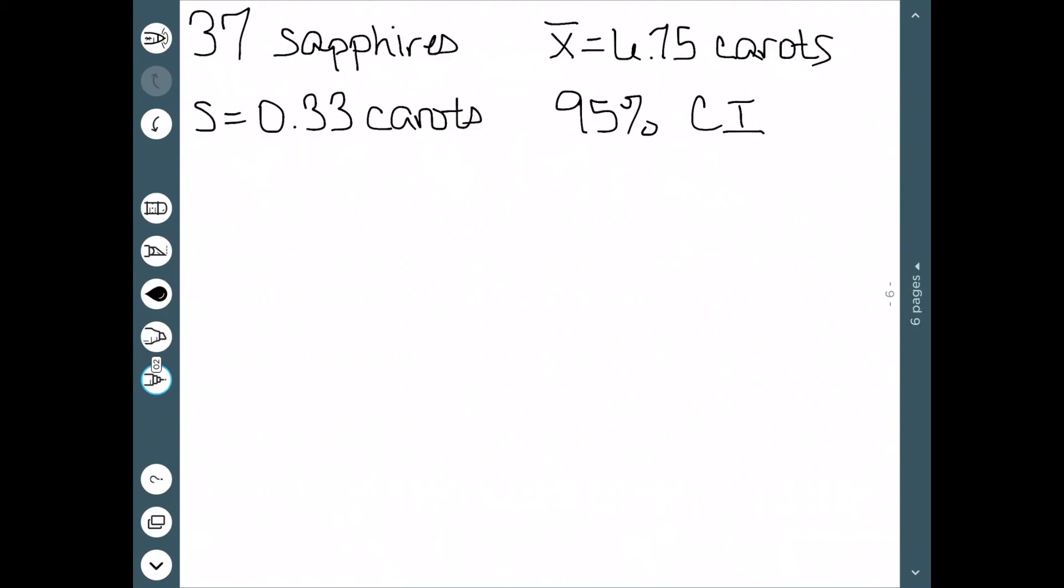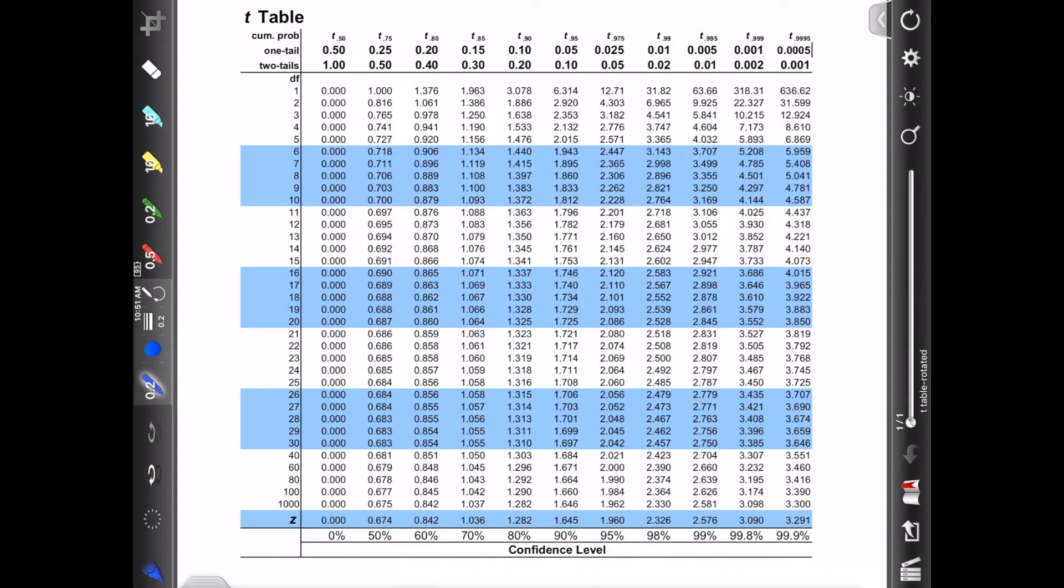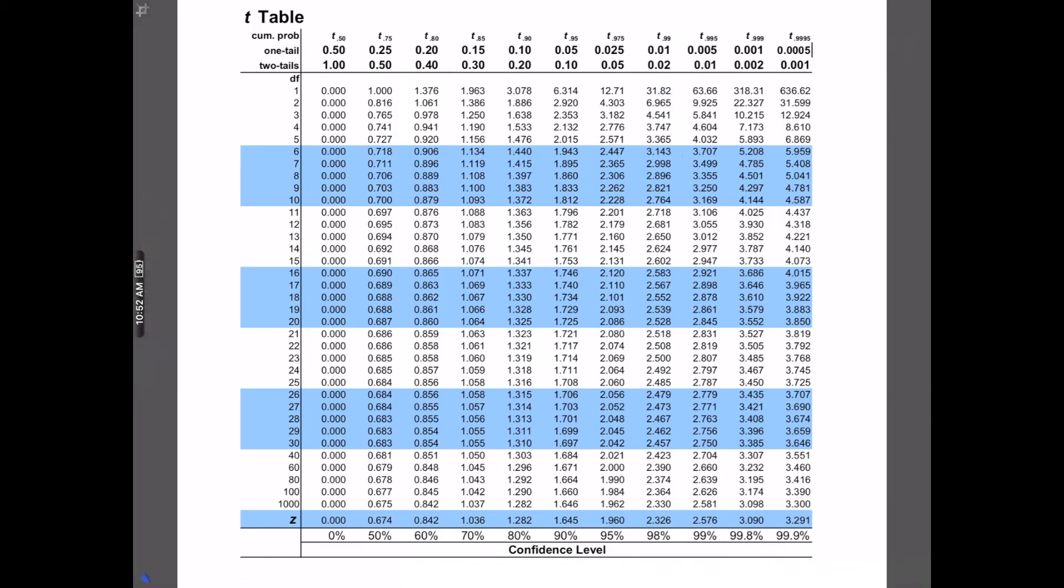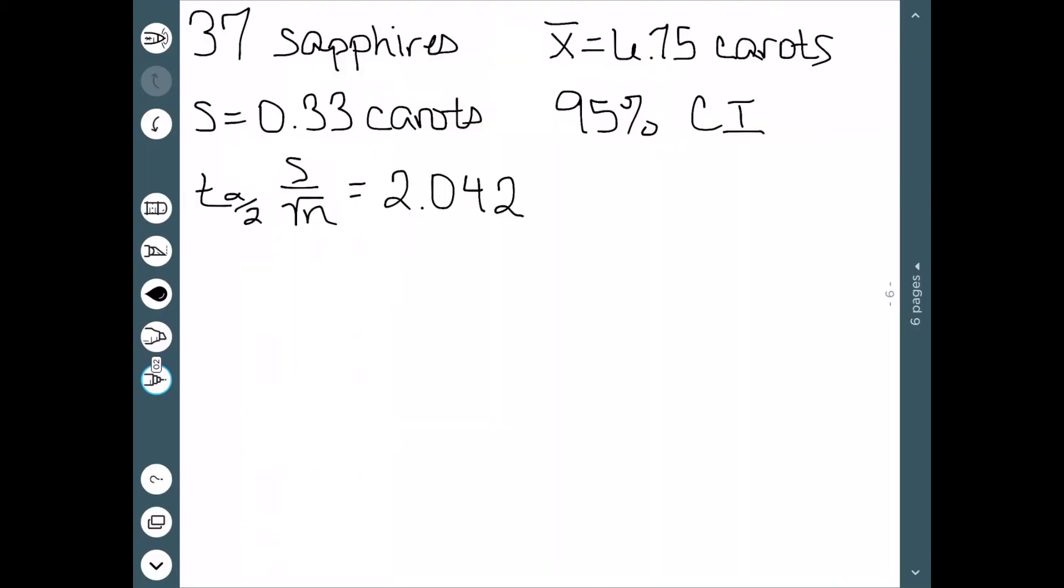So let's start by finding our margin of error. We need to start by finding our value for t. Coming over to our t table, we know that we want a 95% confidence interval. And we know we have a total of 37 carats, so our degrees of freedom would be 36. You'll notice 36 is not on this particular table, so the smallest thing that's the closest is going to be 30, which gives us 2.042. Sticking that into our formula, s is 0.033 and n is 37. So now we just need to work this value out. And this gives us 0.011.